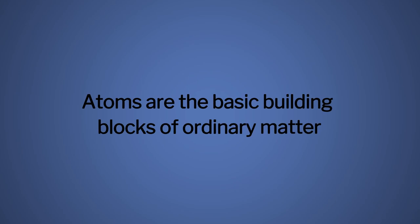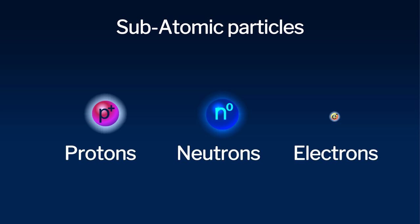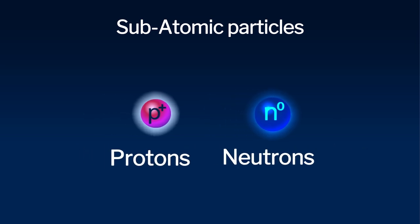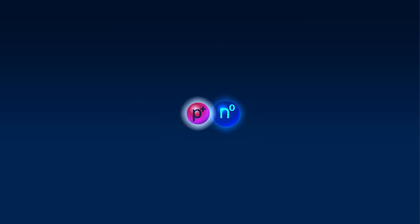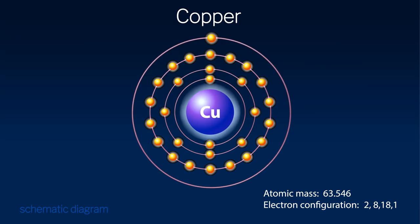Atoms, the basic building blocks of matter, are made up of three basic components: protons, neutrons, and electrons. The protons and neutrons cluster together to form the nucleus, the central part of the atom, and the electrons orbit about the nucleus.